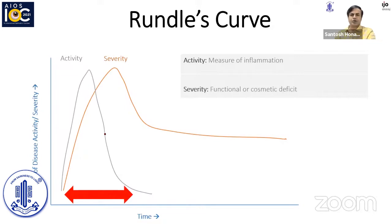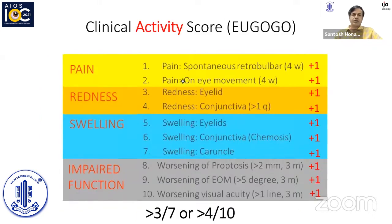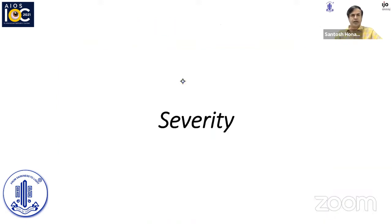Activity is always a measure of inflammation, and following active disease for several months or years, there are functional damages — functional or cosmetic deficits that result from fibrosis. Measurement of activity is mainly based on clinical activity score, though there are other measures as well. A clinical activity score of more than 3 at the primary visit or more than 4 on follow-up out of 10 can predict activity.